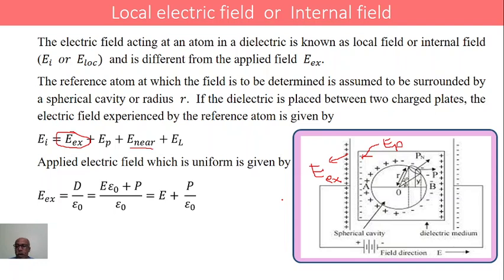Enear is the field due to the other surrounding atoms. We have considered a single atom in the dielectric material, and that atom will be surrounded by a number of atoms. Due to the surrounding atoms, the field at the atom under consideration is Enear. Similarly, EL is the Lorentz field, which is due to the charges on the spherical cavity. We have considered an imaginary sphere around the atom under consideration, and that sphere will have charges due to the polarization, and that is given by the Lorentz field.